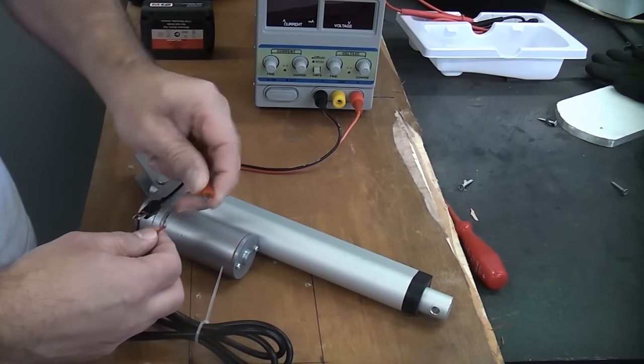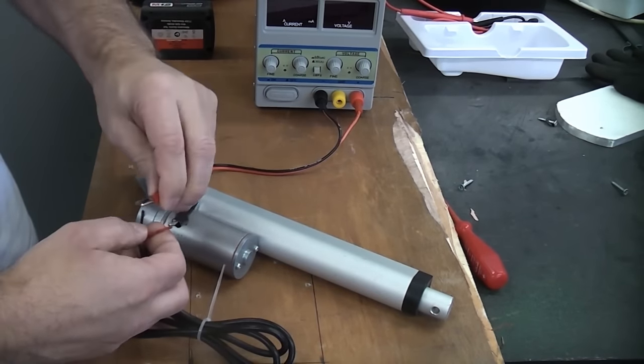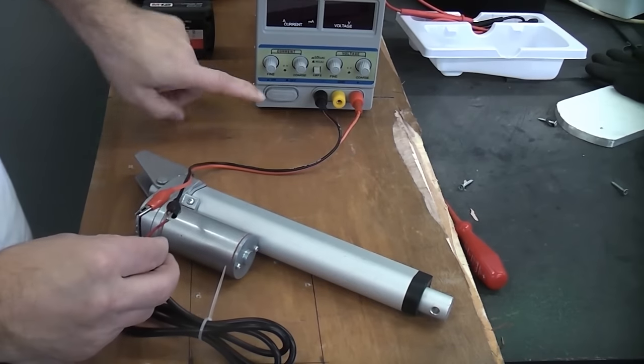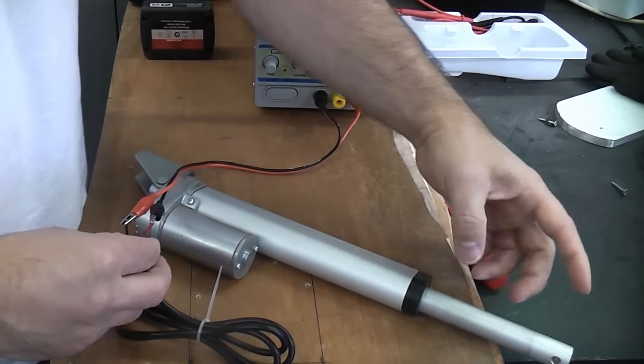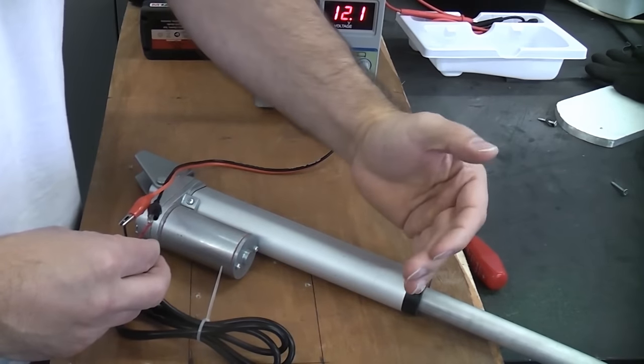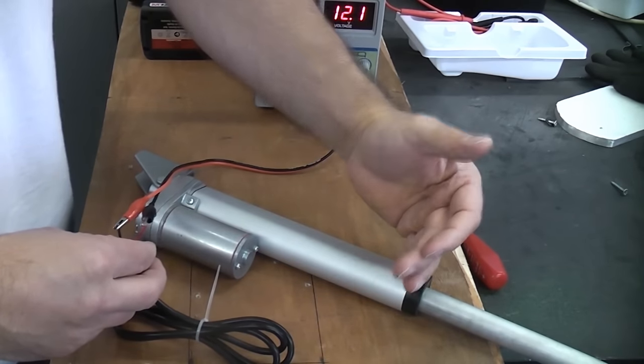I'm now just going to reverse polarity at this end and then I'm going to switch the power supply on, and you'll see that the actuator is extending very quickly. Once it gets to its end of travel there is a limit switch in there that will stop it.